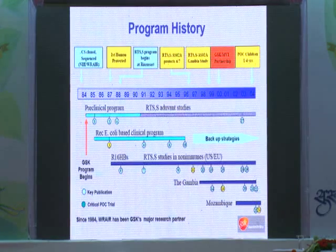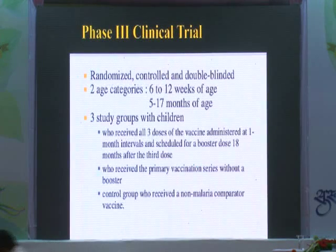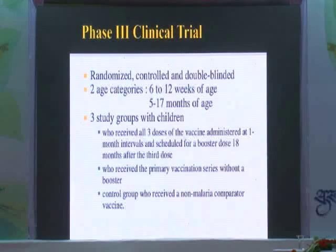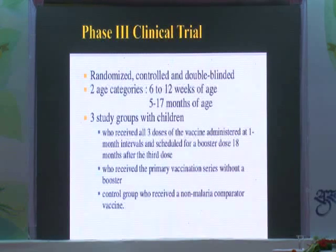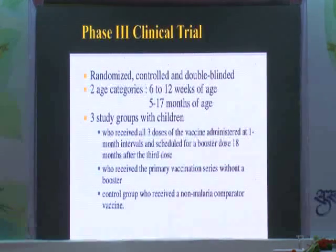The phase III clinical trial was conducted in two age categories: 6 to 12 weeks of age, and 5 to 17 months of age, and three study groups called ARMS. One arm received three doses of vaccine at one-month intervals and a booster after 18 months. The second arm received the primary vaccine with no booster. The third arm received a comparator vaccine such as measles, etc.